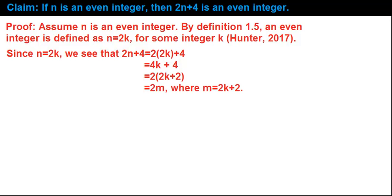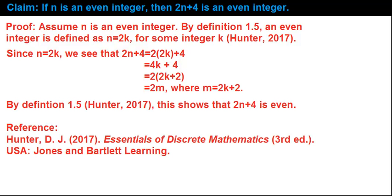And that's really helpful because 2 times an integer, like 2 times m, that's what we mean by an even integer. So let's wrap this up. By definition 1.5, this shows that 2n plus 4 is even. Lastly, we'll give a reference in APA citation style.